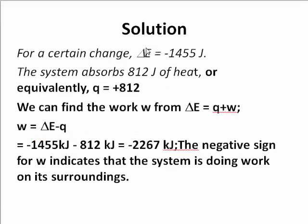For a certain change, the energy change is negative 1455 joules. The system absorbs 812 joules of heat. We would say Q is plus 812. Remember, endothermic processes where heat is absorbed have positive Q. Find the work from W. From delta E is Q plus W, W is delta E minus Q. And we have negative 1455 joules minus 812 equals negative 2267 joules.